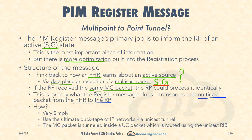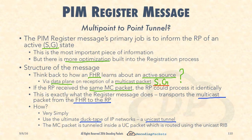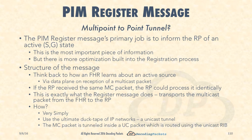How does the register message actually do it? It's extremely simple — what I call the ultimate duct tape of IP networks. It uses a unicast tunnel to tunnel that multicast packet. The multicast packet is tunneled inside a unicast packet, which is simply unicasted from the first hop router to the rendezvous point, and it can be routed using the unicast routing information base. Think of it just like GRE or IP-in-IP tunneling inside a unicast packet traveling from the FHR directly to the RP.